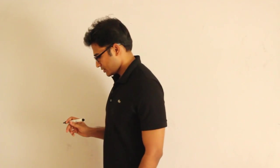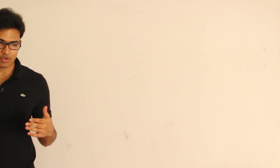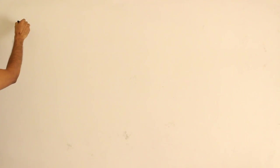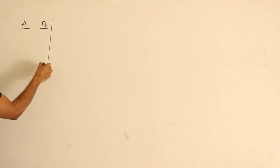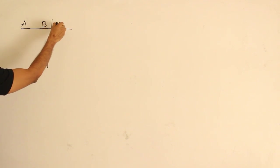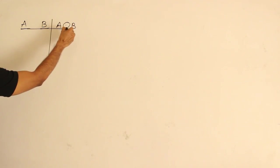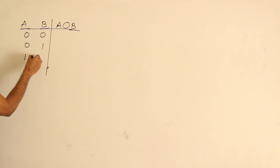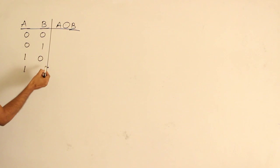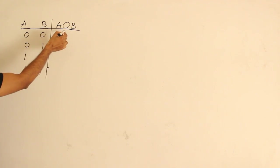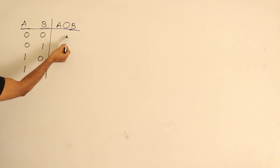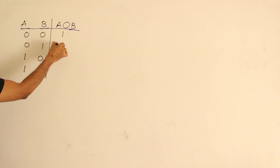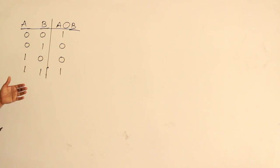Now let's see Exclusive NOR. Exclusive NOR is actually the negation of Exclusive OR. If I have inputs A and B, the truth table for Exclusive OR is: for 00 → 0, 01 → 1, 10 → 1, 11 → 0. Therefore, Exclusive NOR will be exactly the reverse: 1, 0, 0, 1. It is exactly the reverse of Exclusive OR.